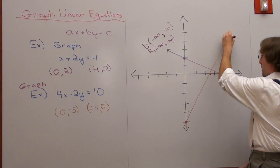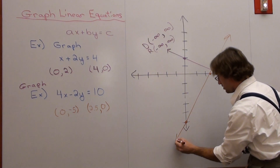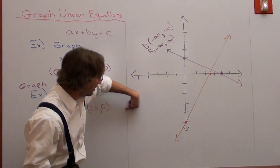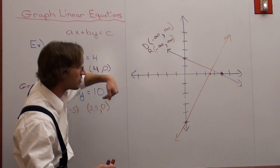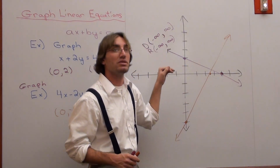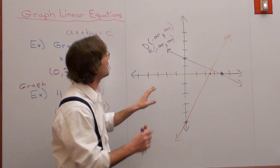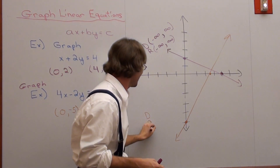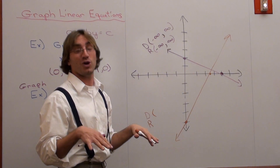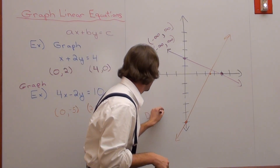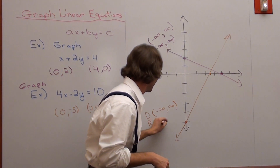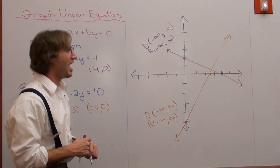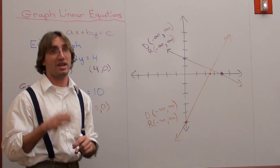I connect the two points. The domain keeps going in both directions and the range keeps going up and down. So domain and range are both negative infinity to infinity. That is graphing using the intercept method. Have a great day. Goodbye.